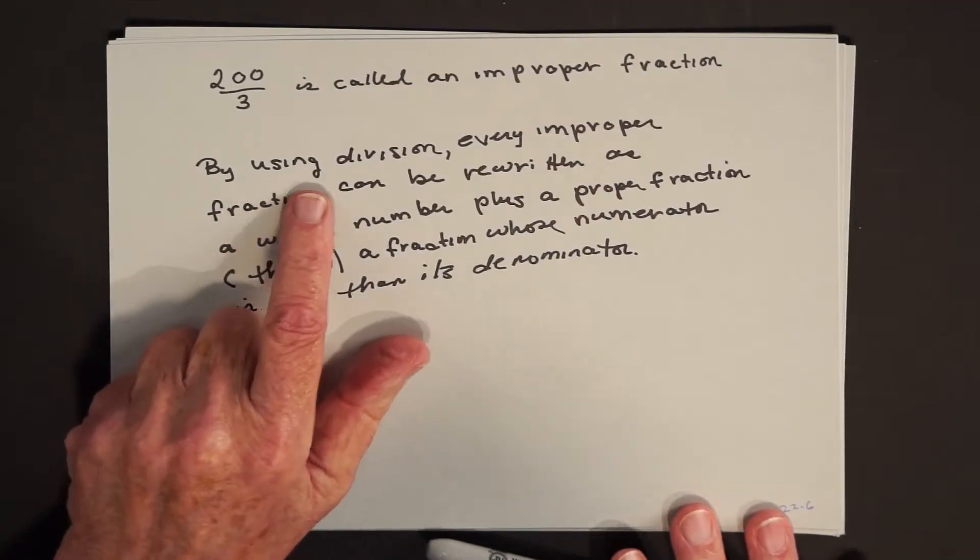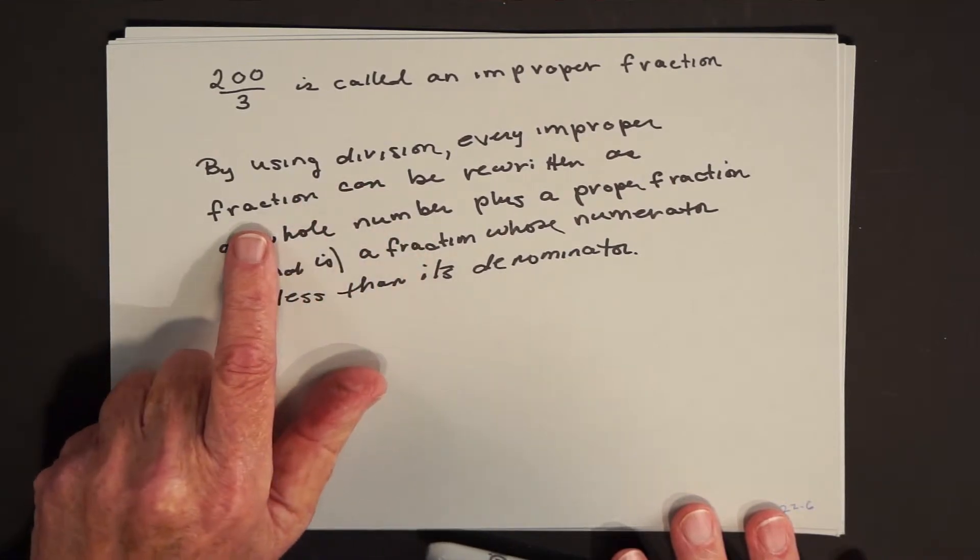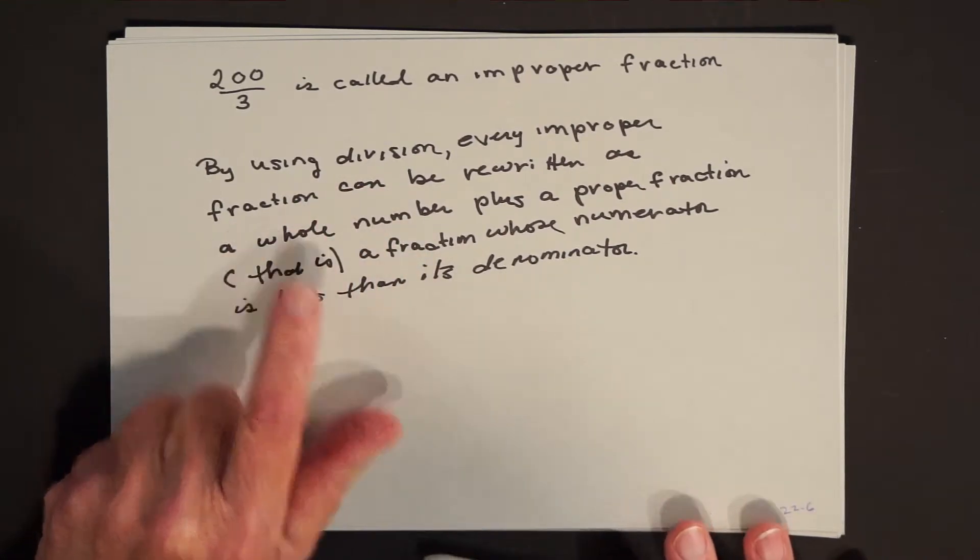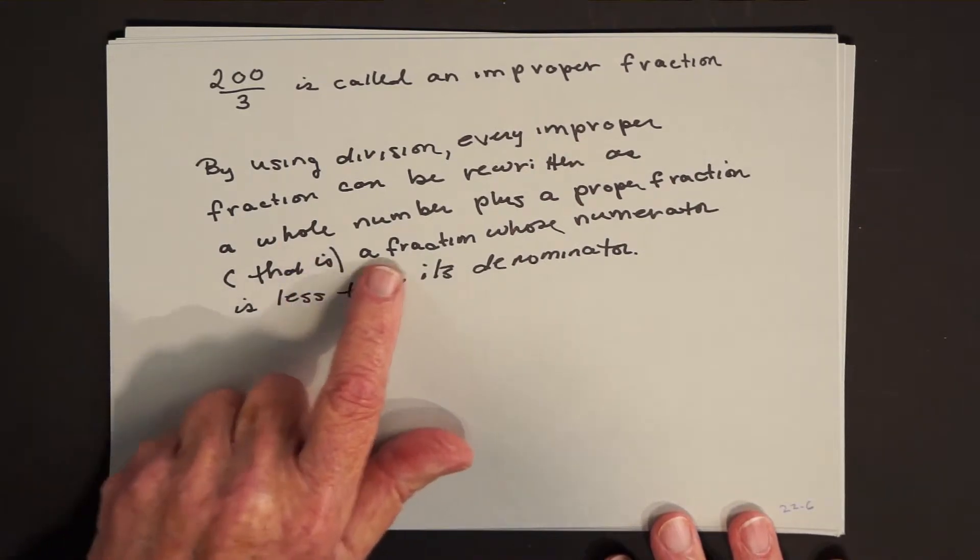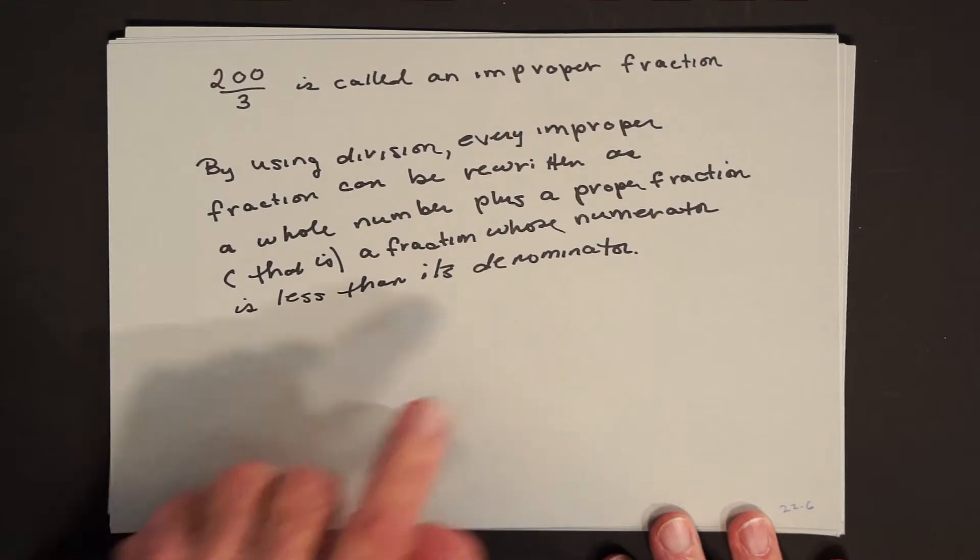So we'll frequently say 4 hours and 30 minutes rather than 3 hours and 90 minutes. So we do the same thing here. We say by using division, every improper fraction can be rewritten as a whole number plus a proper fraction, which means a fraction whose numerator is less than its denominator.